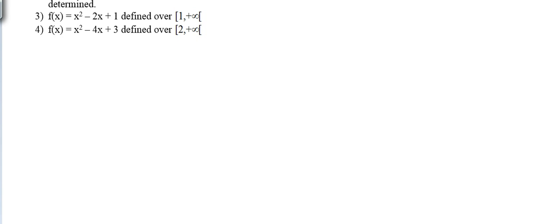This is part three of the inverse functions video series. We need to find the inverse for f(x) = x² - 2x + 1 defined over [1, +∞). The domain of f(x) is all of ℝ because it's a polynomial function, so it is defined and continuous over [1, +∞).